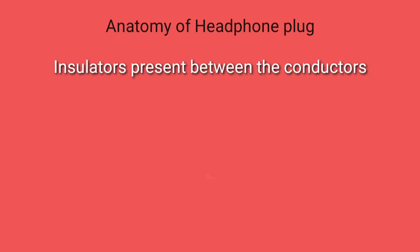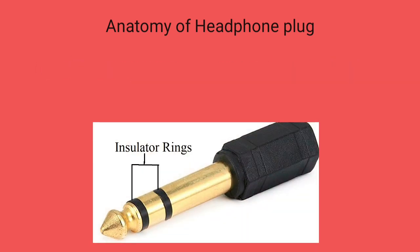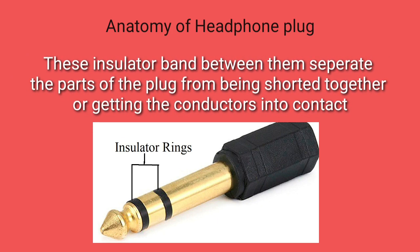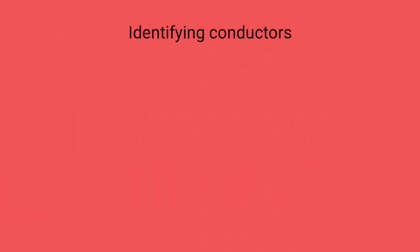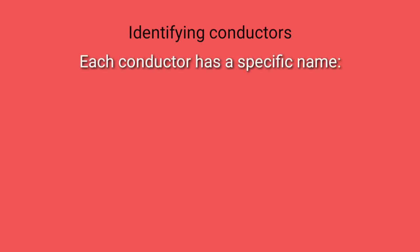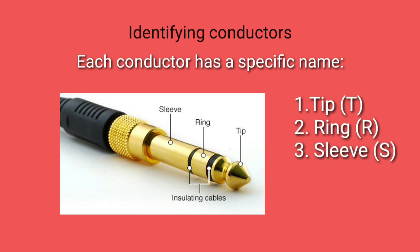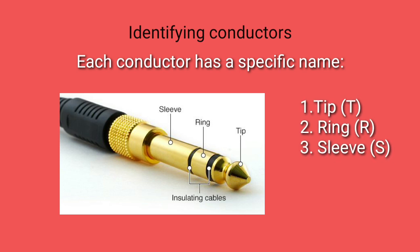Insulators are present between the conductors. These insulator bands separate the parts of the plug from being shorted together, or from getting the conductors into contact. Each conductor has a specific name: Tip (T), Ring (R), and Sleeve (S).